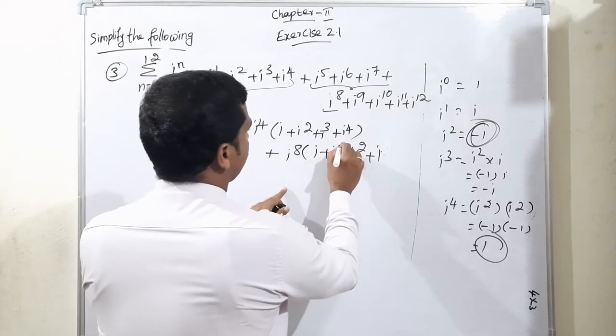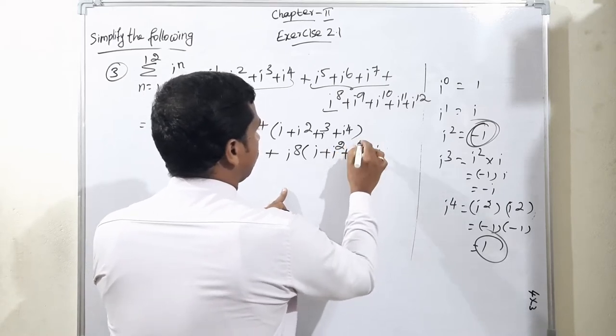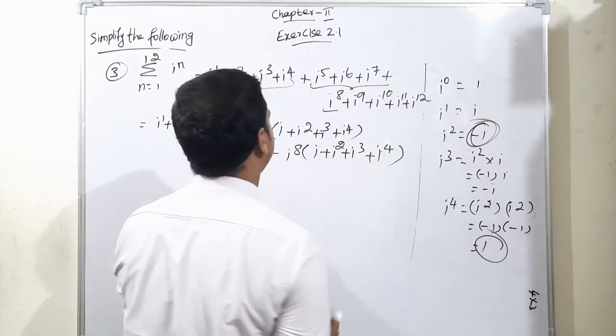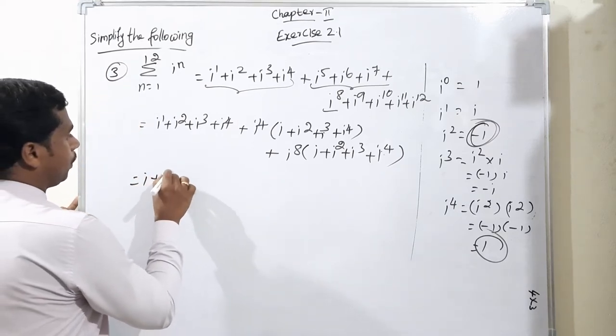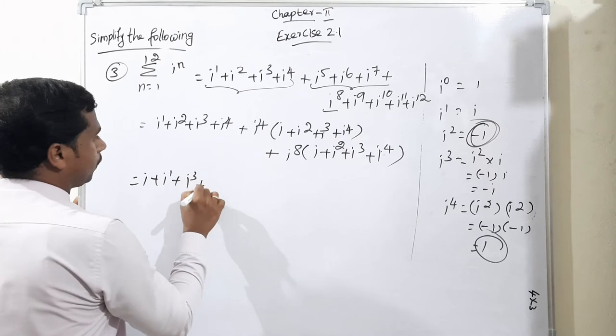This is actually i to the power 2, this is i to the power 3, then i to the power 4. So again we have i plus i to the power 2 plus i to the power 3 plus i to the power 4.